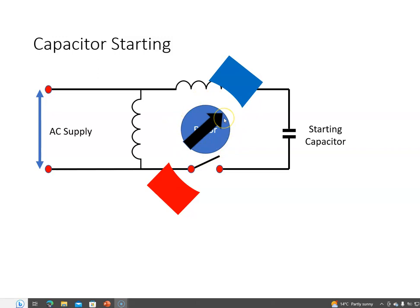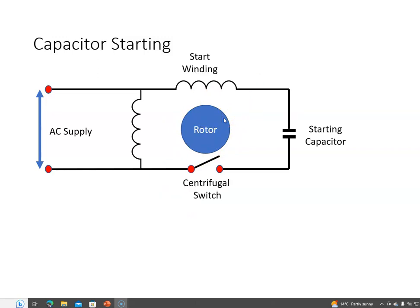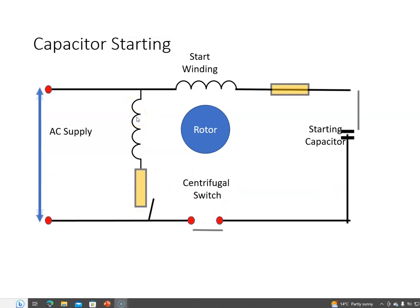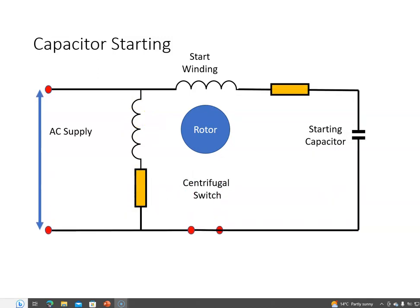Okay, so when we look at this capacitor start system, really the start winding is an inductor and a resistor in series with it because the winding will have some resistance, and similarly the run winding will have an inductor and a resistor in series.